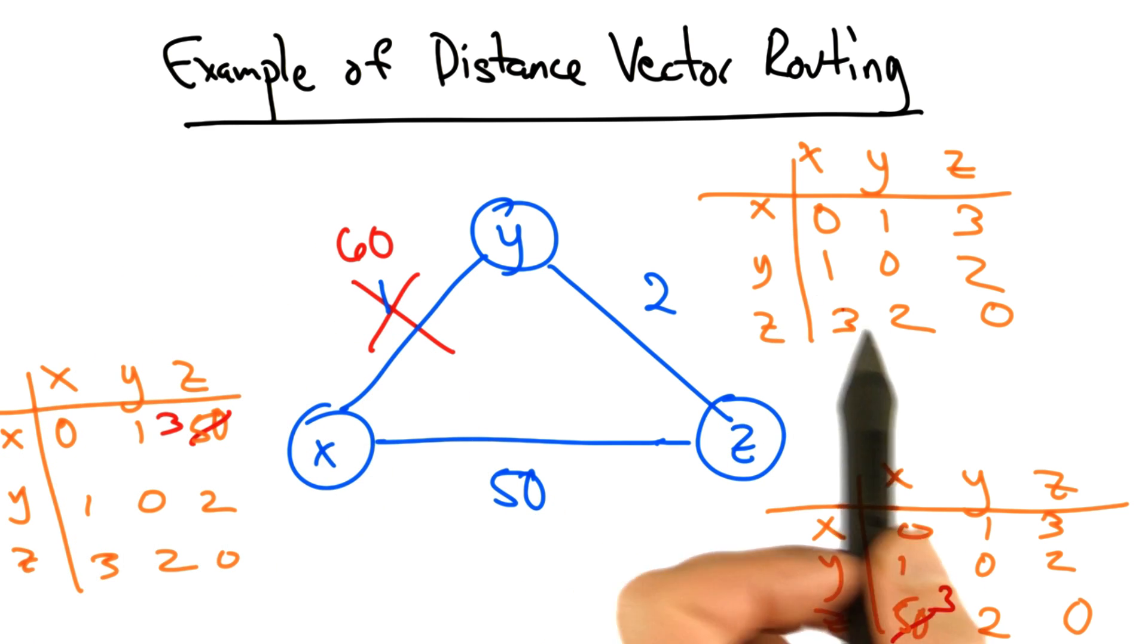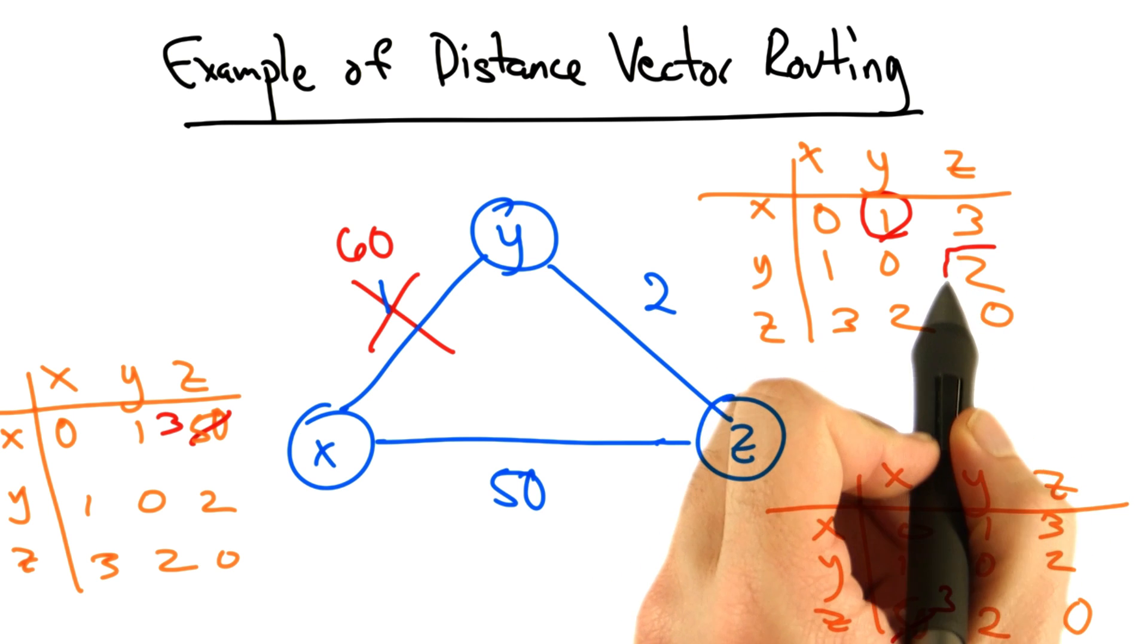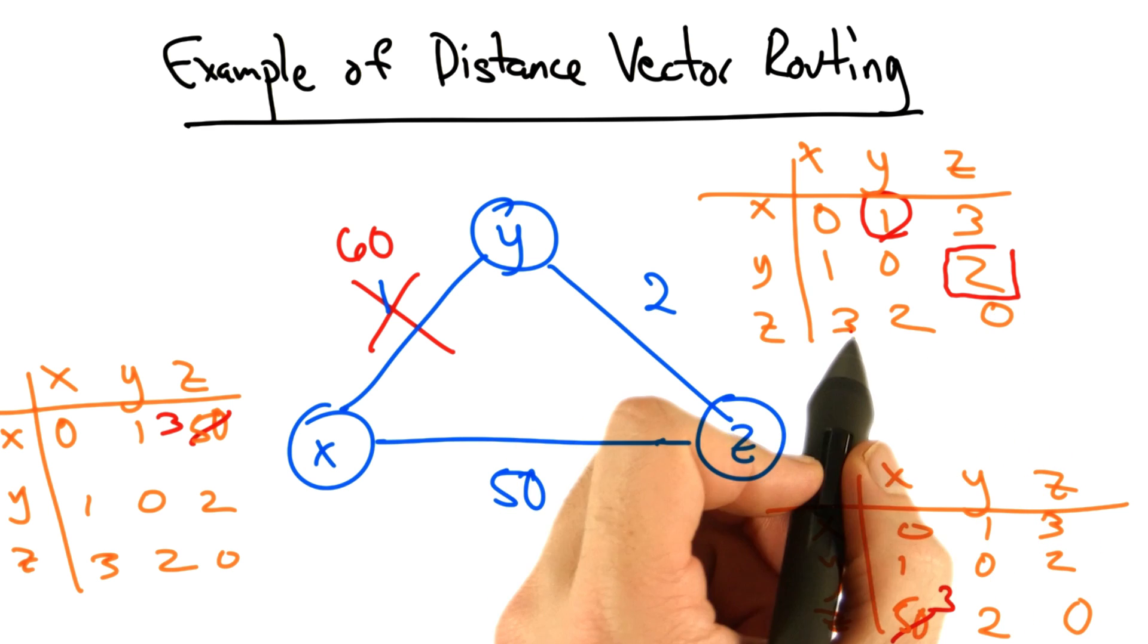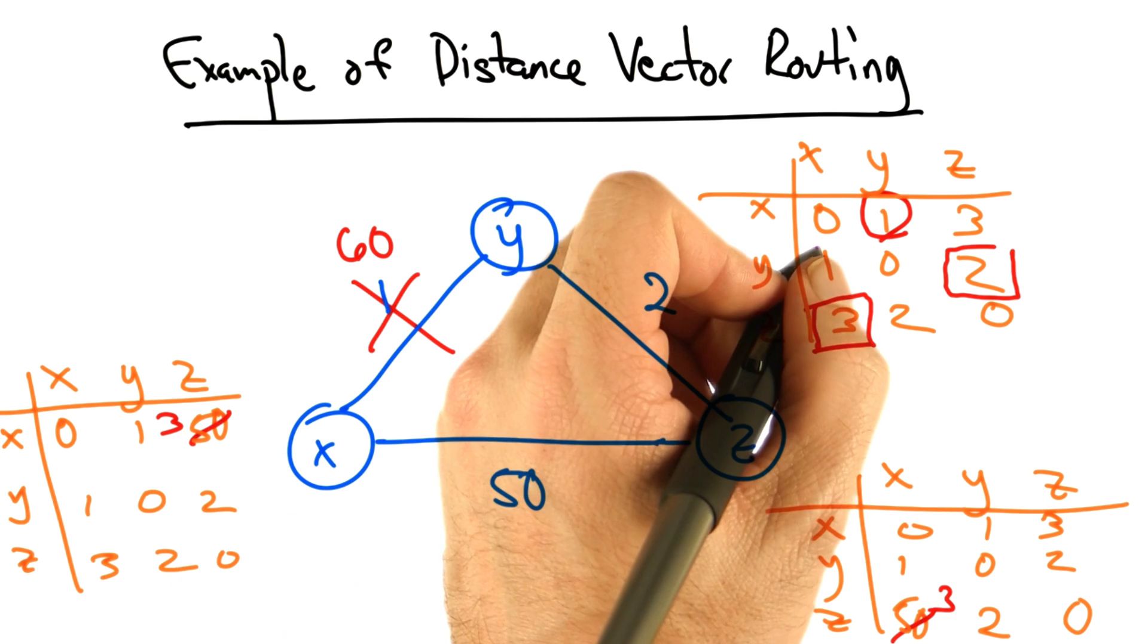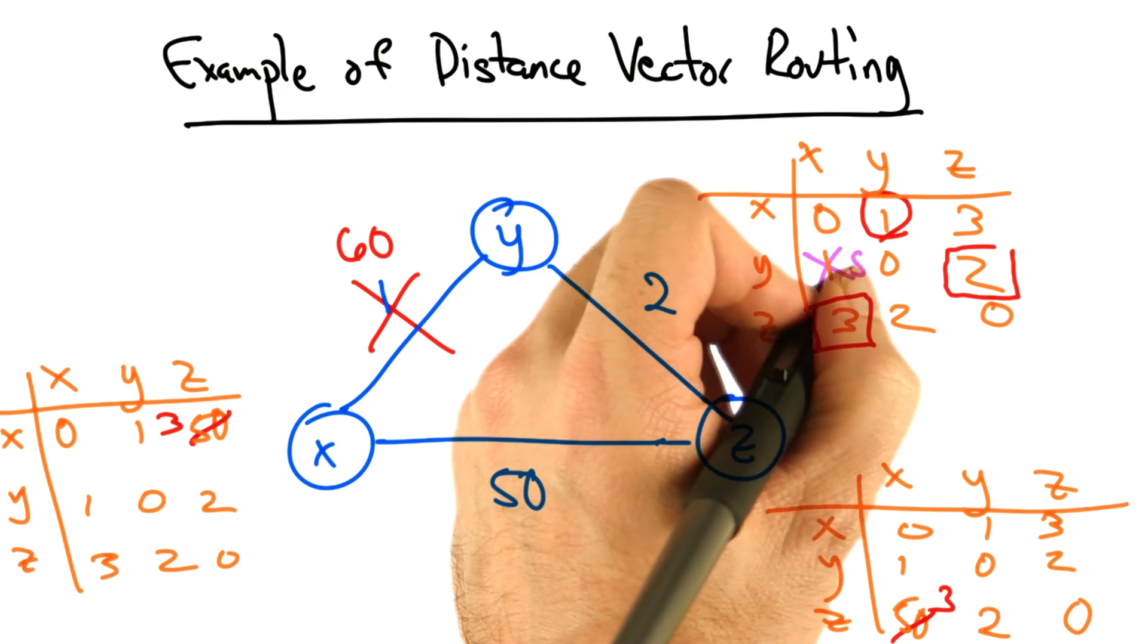Well now in this case, y would need to update its view of the shortest path between y and x. Now it's no longer 1, but it's not 60 either. To see why, let's go back to our Bellman-Ford equation. We can see that y thinks it can get to z with a cost of 2, and that z can get to x with a cost of 3. So in fact, it's going to update this entry from 1 to 5.